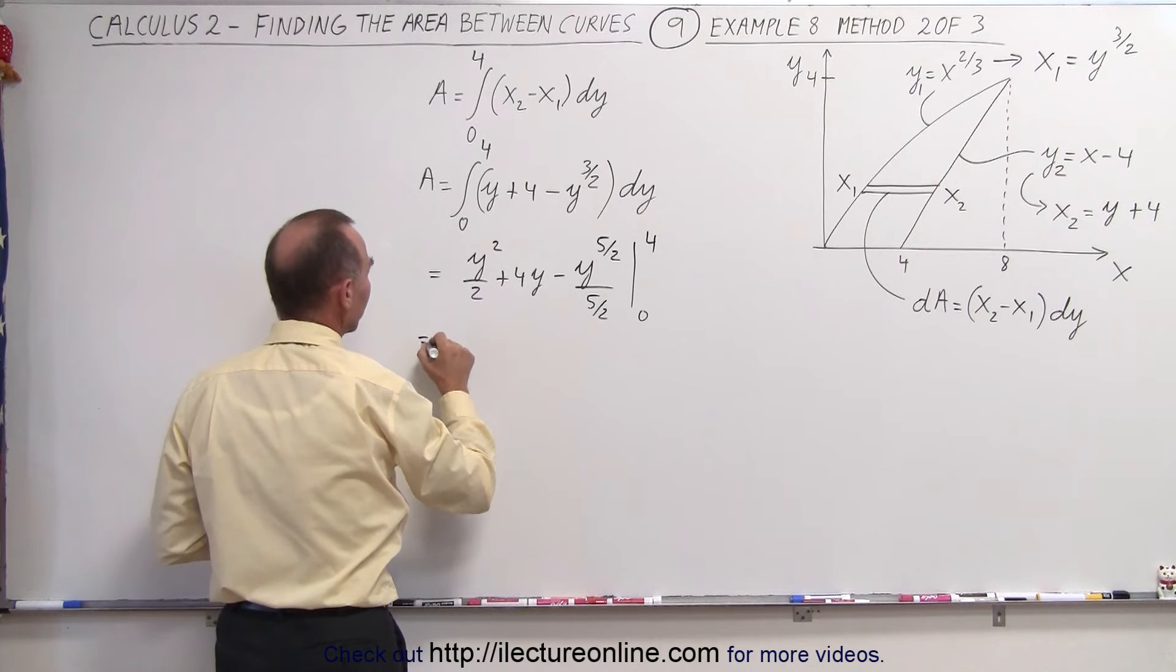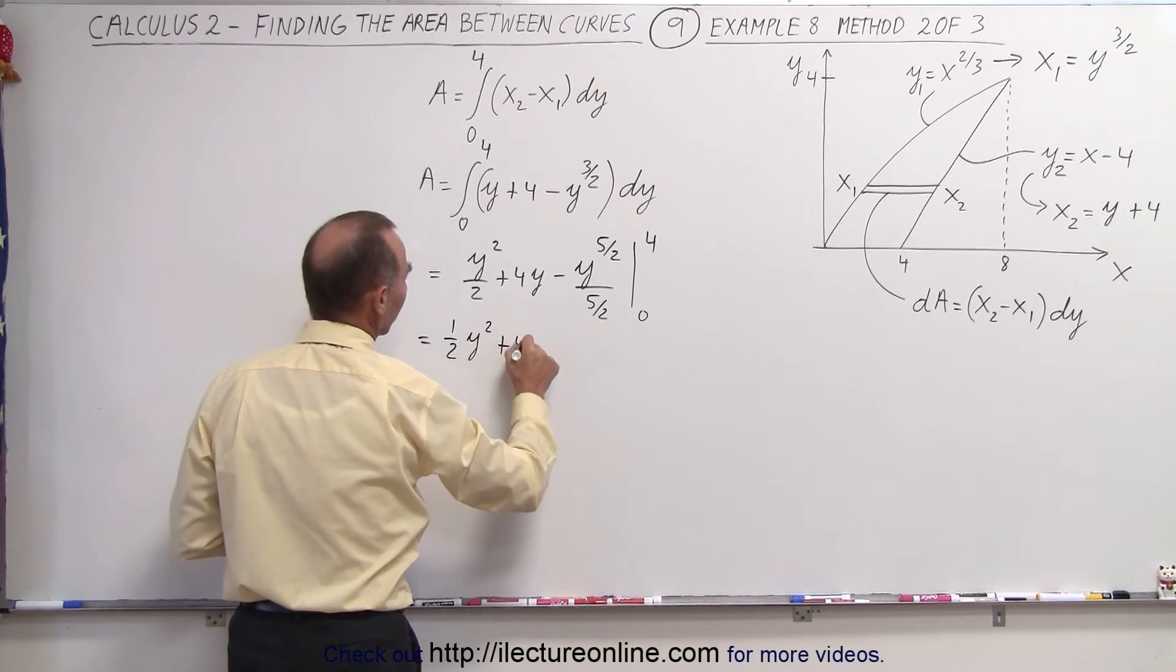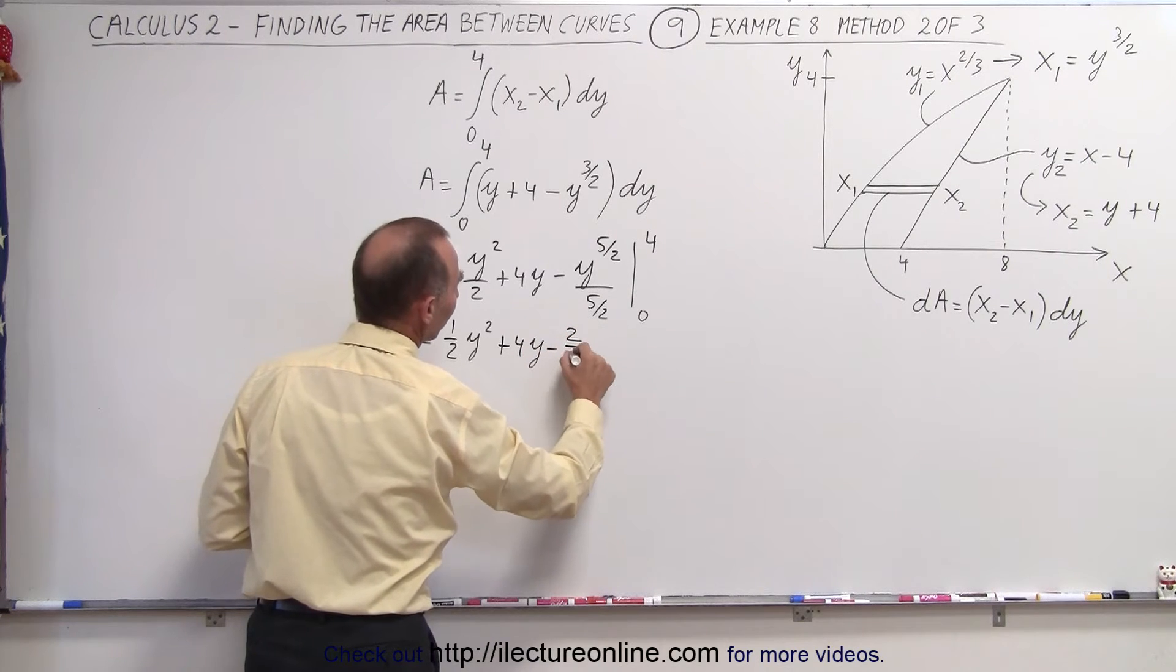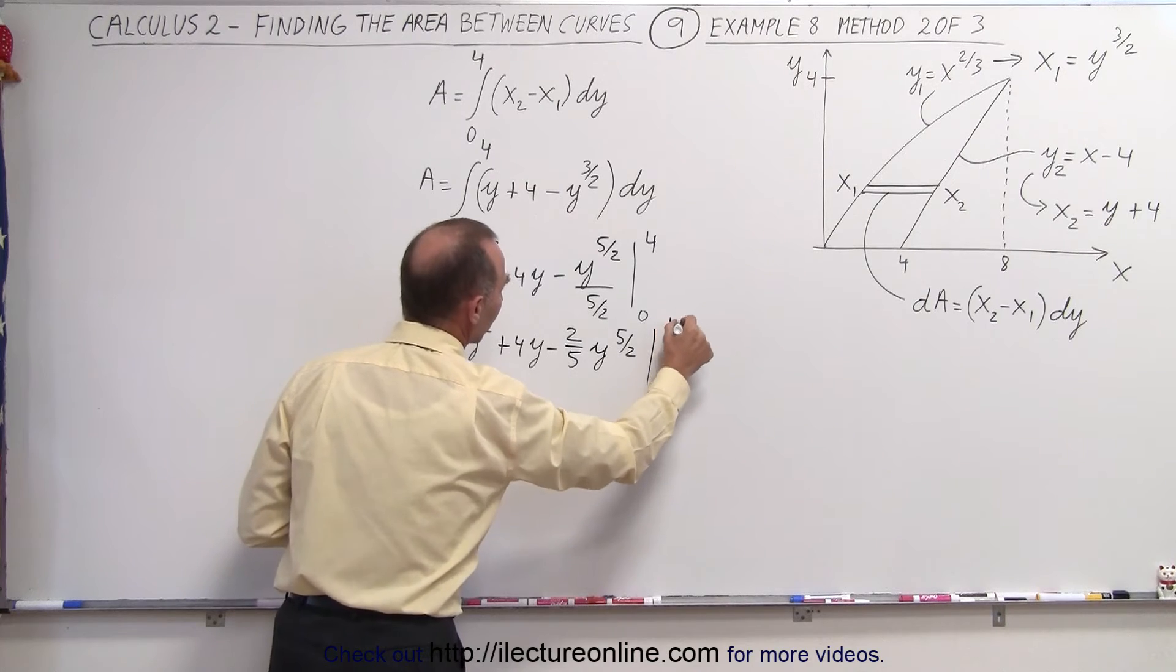Simplifying that a little bit, this is equal to 1 half y squared plus 4y minus 2 over 5 times y to the 5 halves evaluated from 0 to 4.